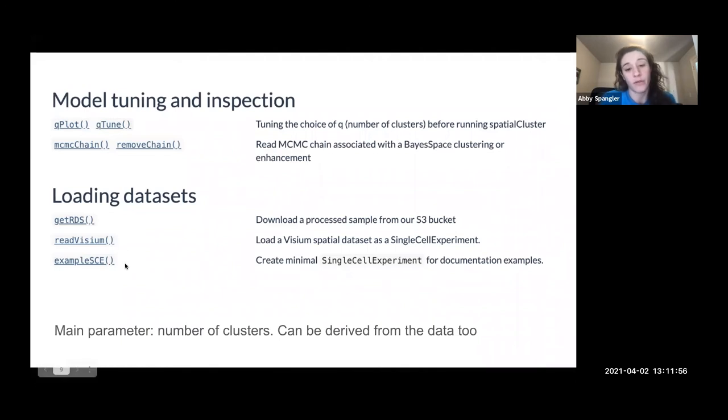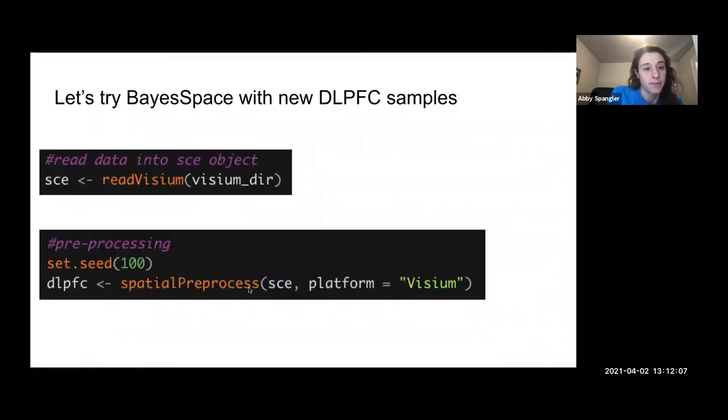They also have three different useful functions for loading the data into BaySpace. And the one that I've been using is this ReadVisium, which is super handy. So I'm going to walk you through the analysis that I did on my DLPFC samples. And then I'll show you some snippets of the vignette from BaySpace, which is actually from a different plot. They use a spatial transcriptomics platform, whereas all of our data is Visium data. You use their super handy functions to just read your Visium data in, and this reads data that comes directly from the direct output of Space Ranger, and it turns it into an SC object very easily. So that's cool.